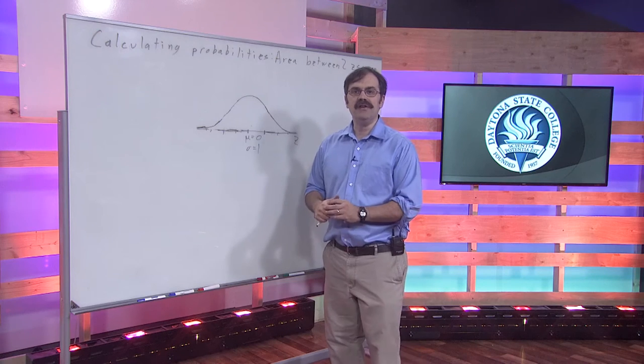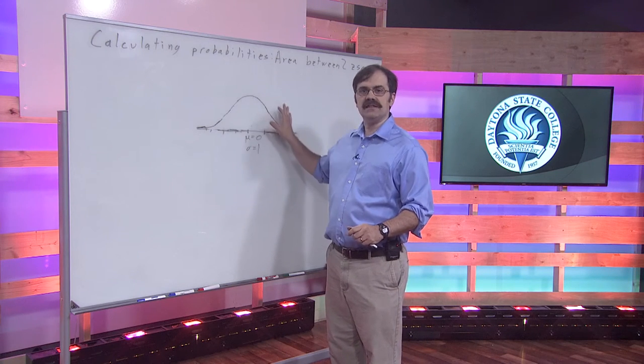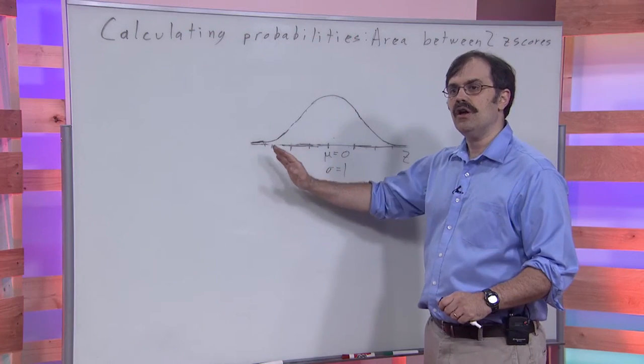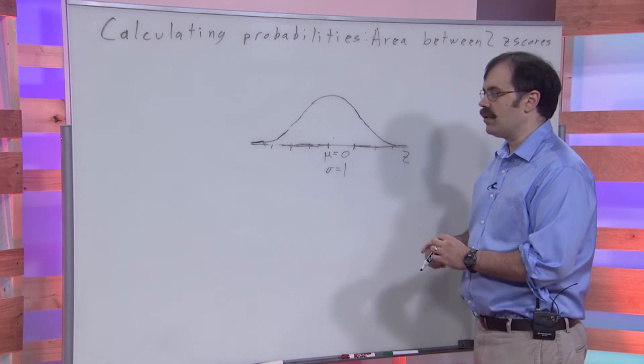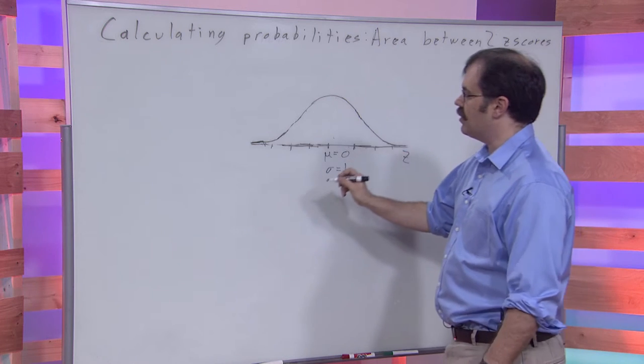In the previous two videos, we talked about finding area under the standard normal curve to the left of a given z-score, to the right of a given z-score, and now we're going to talk about finding the area between two z-scores.